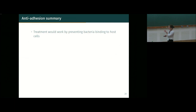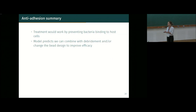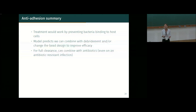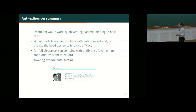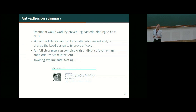To summarize this section: the MAM7 treatment works by preventing bacteria from binding to host cells. Our model predicts we can combine it with debridement or change bead design to improve efficacy, but for full clearance we would probably need to combine it with antibiotics — and that does work on antibiotic-resistant infections. We are awaiting experimental testing from our collaborators in Texas to test treatment predictions and identify which parameter regime we are actually in.